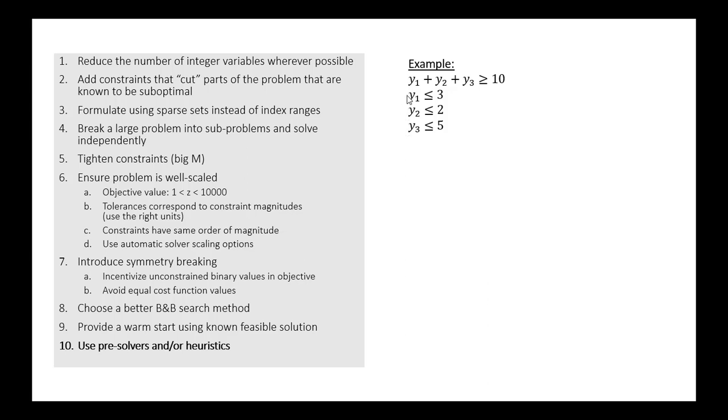And that is that y1 is equal to 3, y2 is equal to 2, and y3 is equal to 5. That's the only possible way that all four of these constraints can be satisfied using integral variables for y.